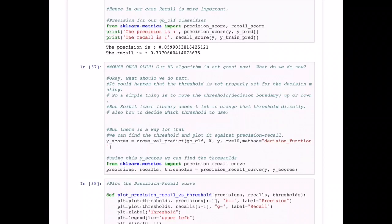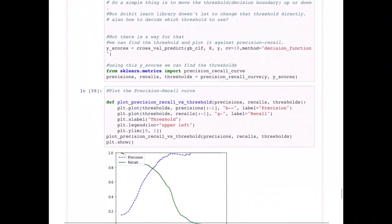There is an alternate way through the cross_val_predict again, and there we can pass a method called decision_function, and that will tell us what are the current thresholds being used. Based on that, we can calculate our thresholds and we can plot it against our precision and recall.